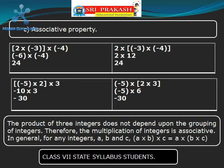The multiplication of integers is associative. In general, for any integers A, B, and C: (A into B) into C is equal to A into (B into C).